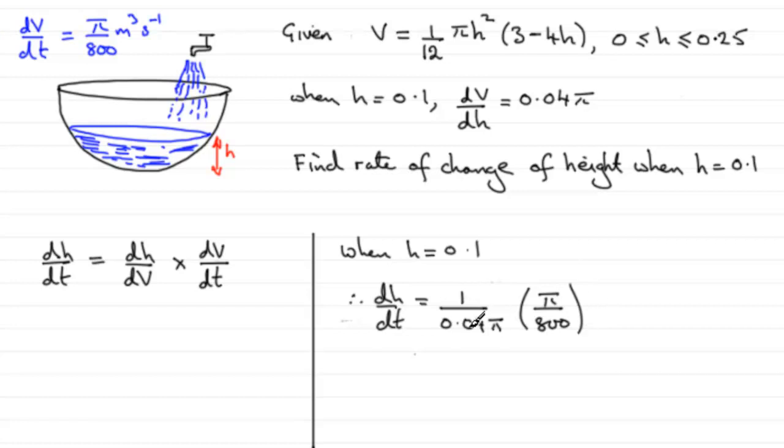So just simplify this, the π's cancel. And if you do 1 over 0.04 times 1 over 800, you get exactly 1 over 32. And 1 over 32, you could express as a decimal if you want to. If you do, it's going to be 0.03125. And I suppose you could round that to three significant figures. If you did, then to three significant figures, it's going to be 0.0313.